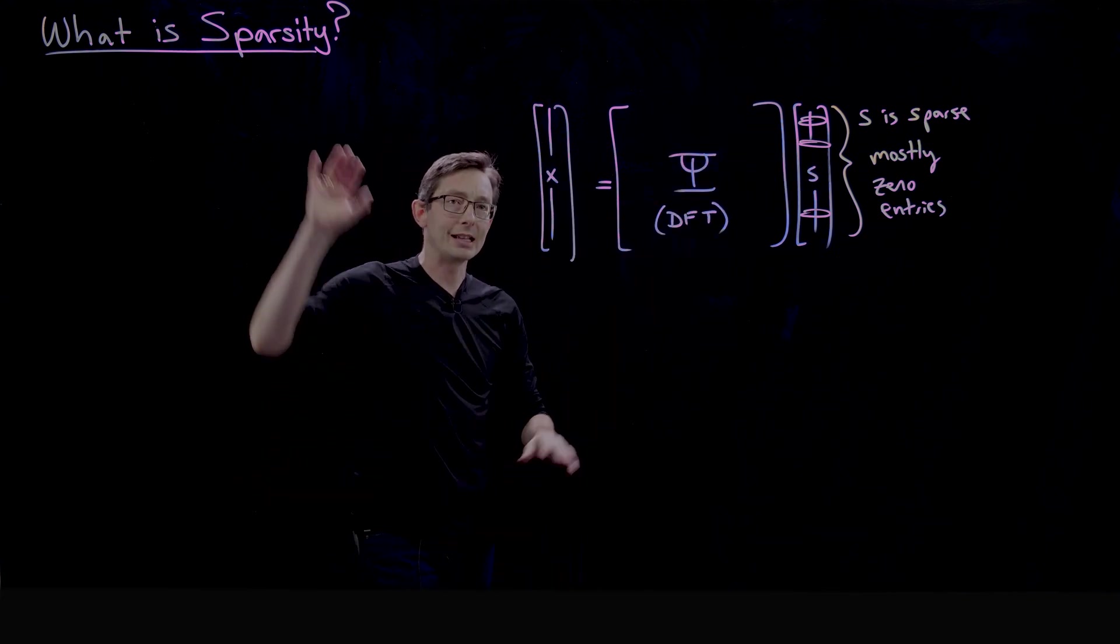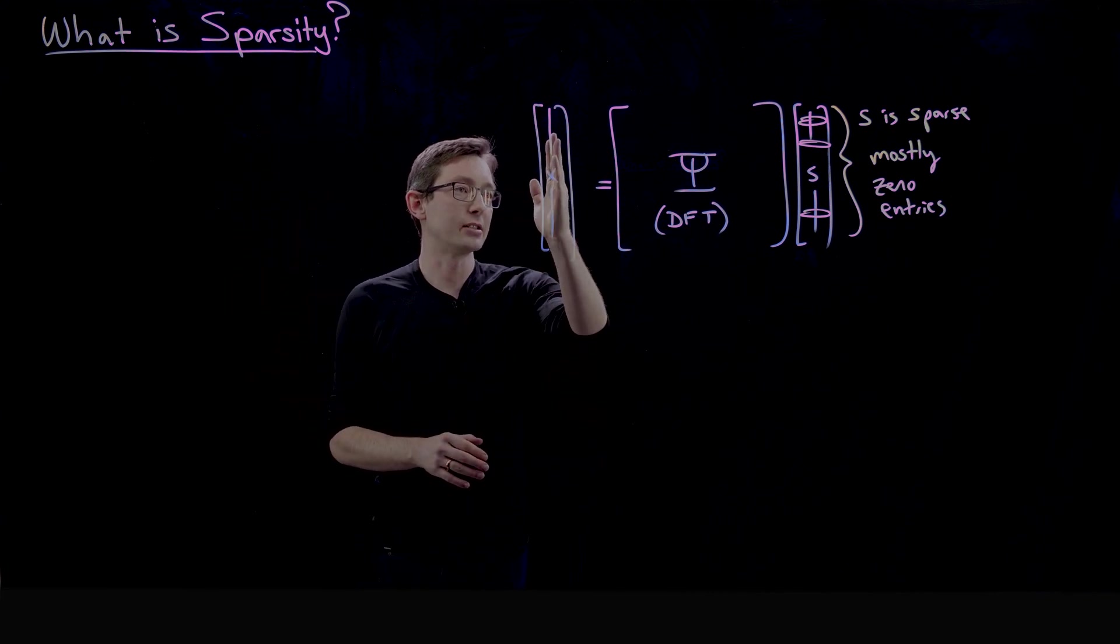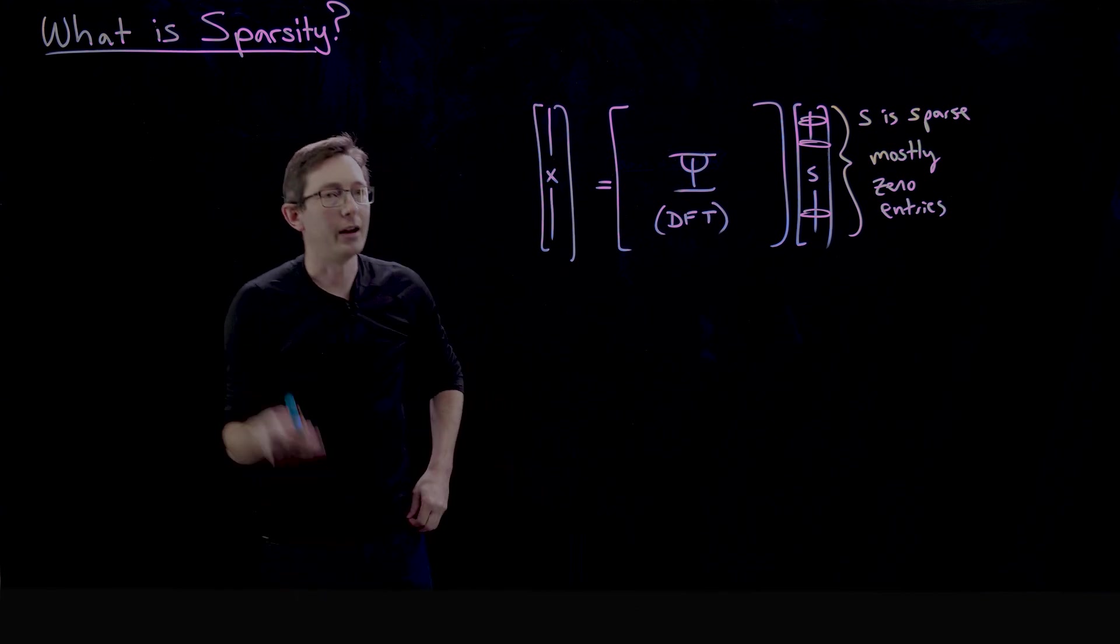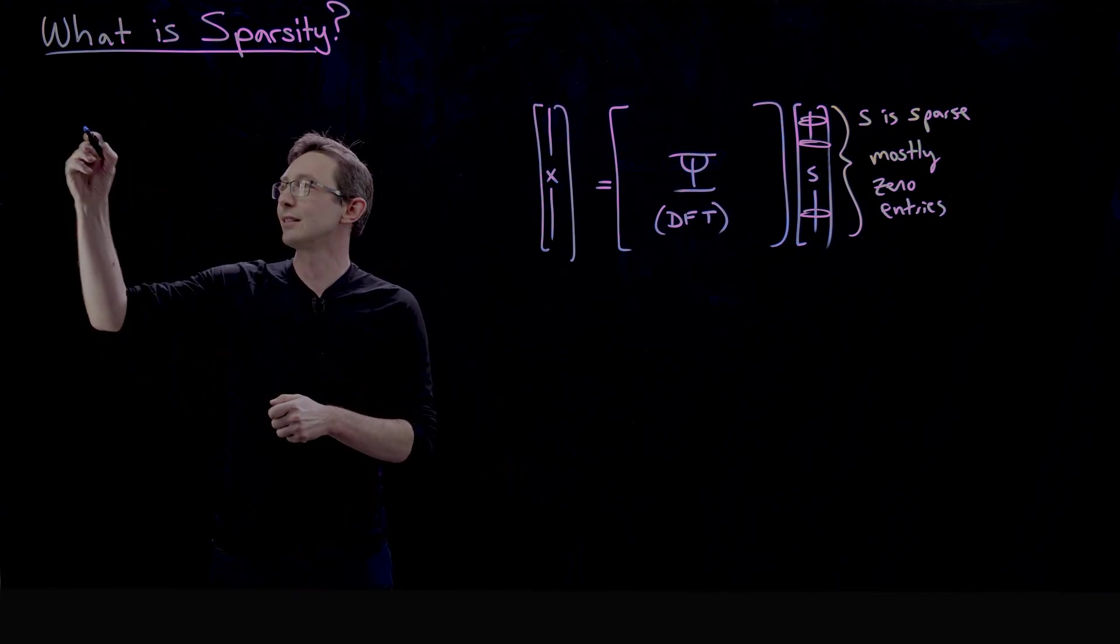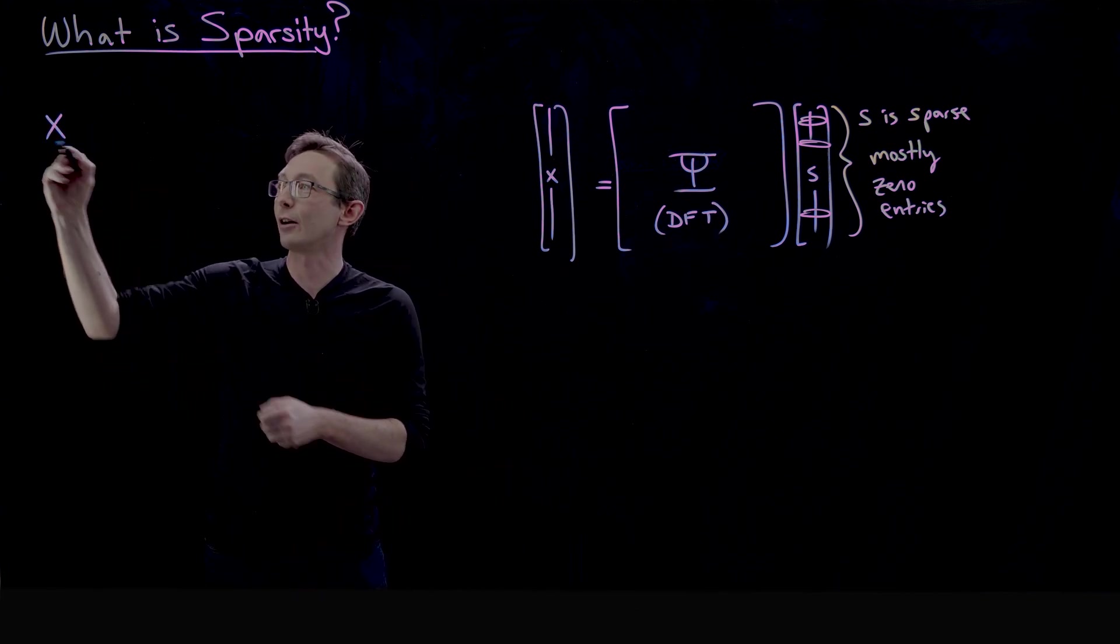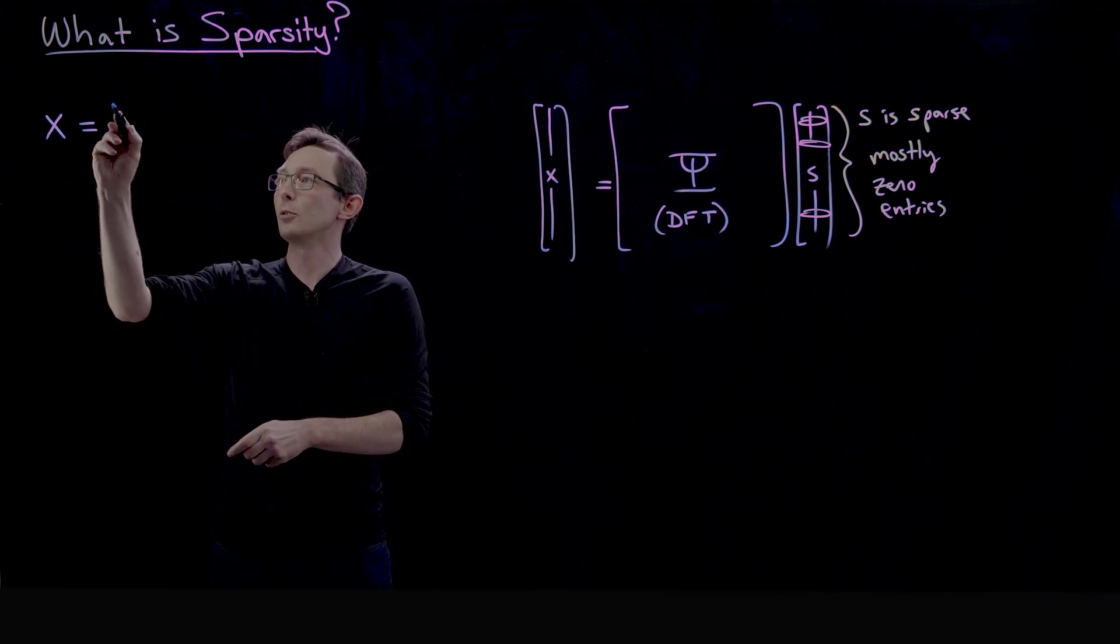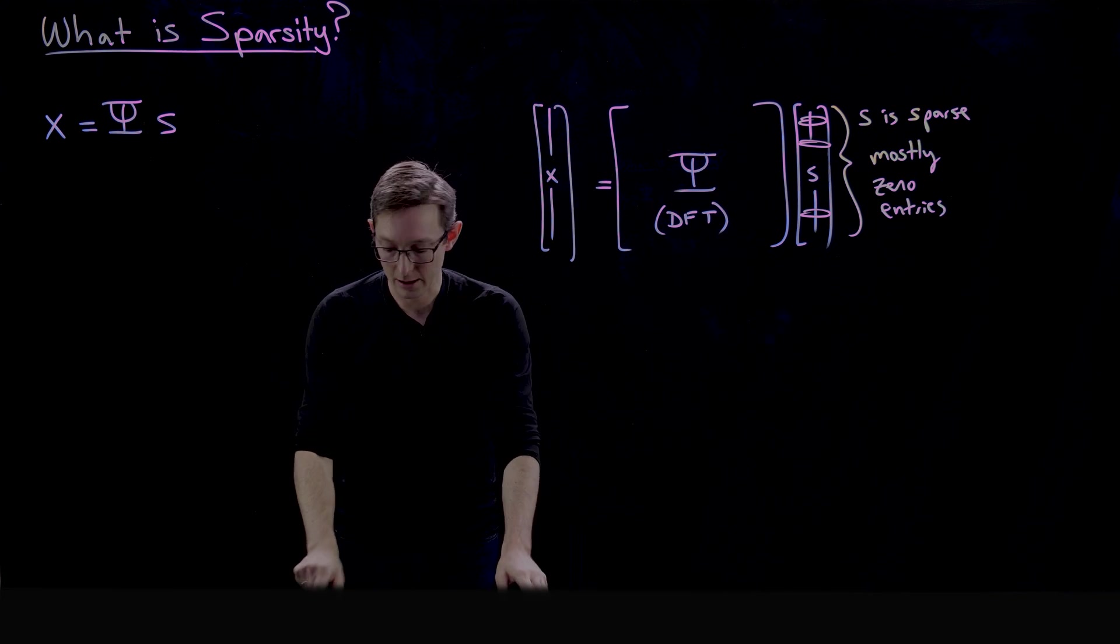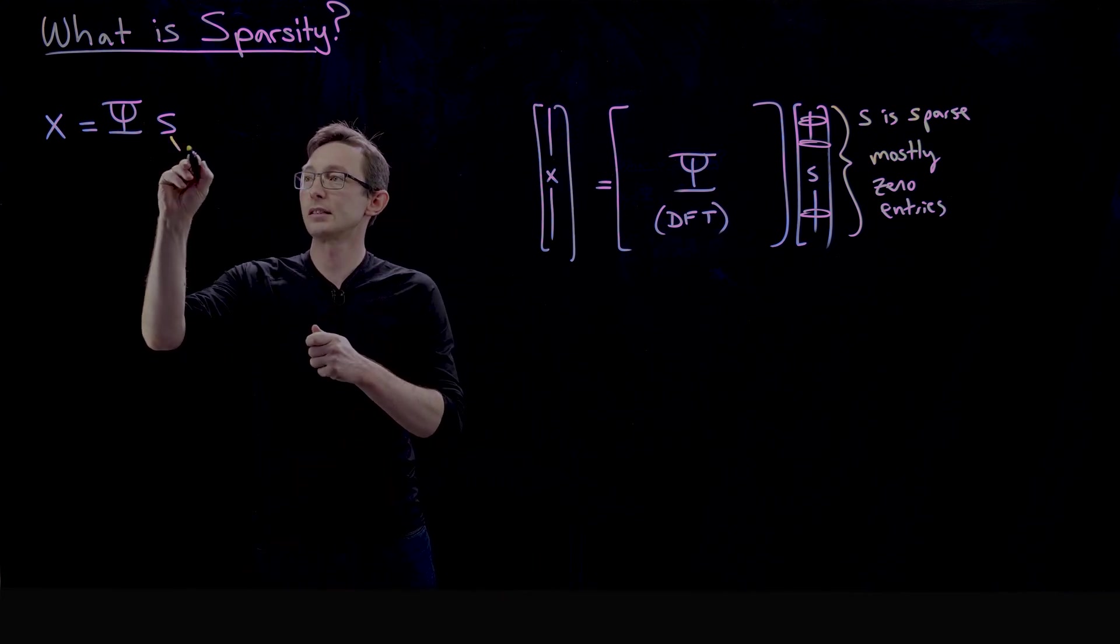So that's the idea of sparsity: you can write your signal X in some new basis and it mostly contains zeros, and I'm just gonna write that over here because we're gonna use this later. We're gonna say X, our original signal, equals ψ times s, where s is sparse.